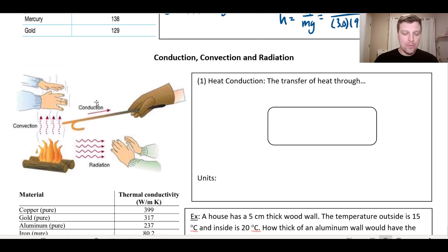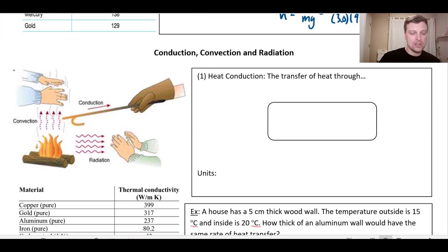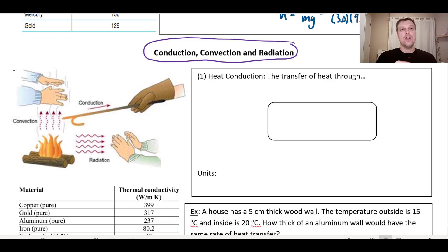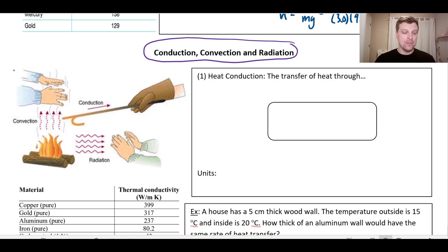The last thing we need to talk about is the three ways heat gets transferred between objects. Heat can transfer through conduction, convection, or radiation. A great way to visualize this is to look at a fire. If you take a metal poker and stick it in the fire, the heat transfers through the hot poker and reaches your hand — that's conduction. If you put your hands above the fire, you feel warm air rising — that's convection. And even if you're just beside the fire, you feel warmth from electromagnetic radiation — that's radiation.